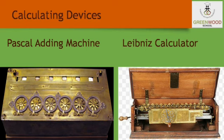What is Leibniz calculator? Leibniz, the famous German mathematician, improved on Pascal's machine in 1671. The Leibniz calculator was a mechanical device. Apart from performing addition and subtraction, Leibniz could do even multiplication, division, and find square roots.